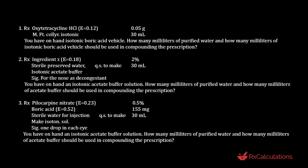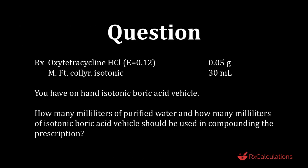We will be looking at three questions sequenced in order of increasing complexity. The first question: you have oxytetracycline hydrochloride with an E value of 0.12, you have 0.05 grams in your preparation, and you are making an eye wash that is isotonic with a volume of 30 milliliters. You have on hand isotonic boric acid vehicle. How many milliliters of purified water and how many milliliters of isotonic boric acid vehicle should be used in compounding the prescription?